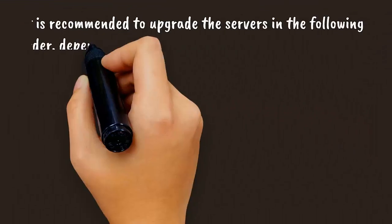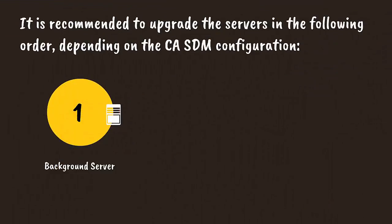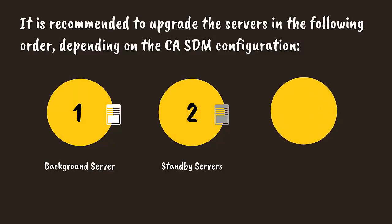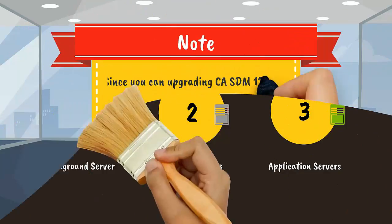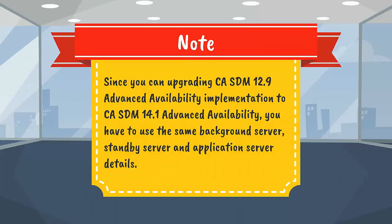It is recommended to upgrade the servers in the following order, depending on the CA SDM configuration: background server, standby servers, application servers. Since you are upgrading the CA SDM 12.9 Advanced Availability implementation to CA SDM 14.1 Advanced Availability, you have to use the same background server, standby server, and application server details.